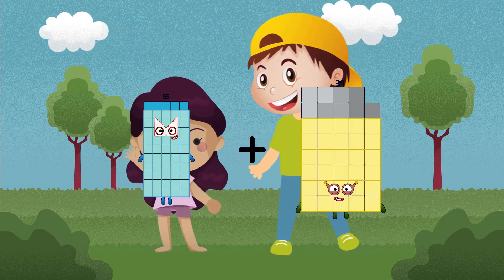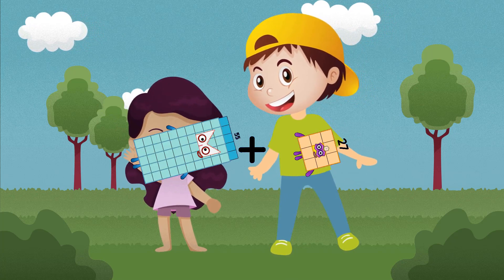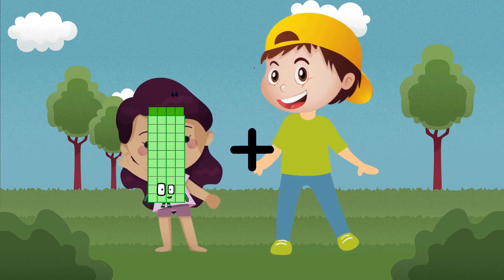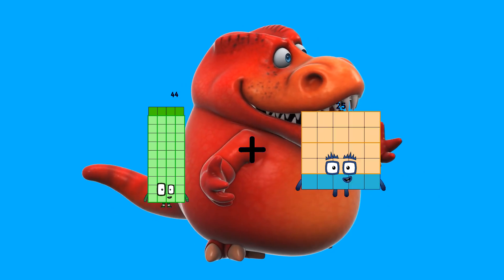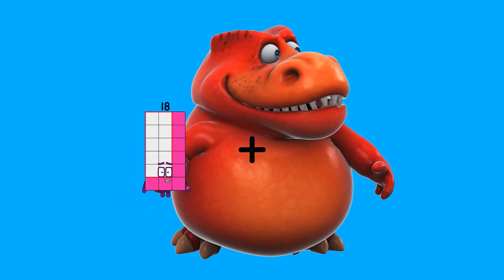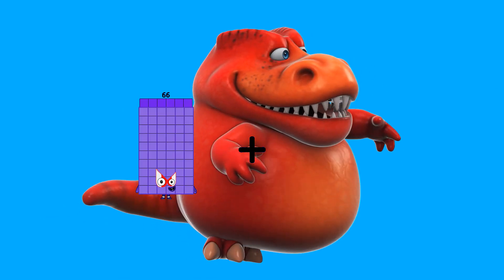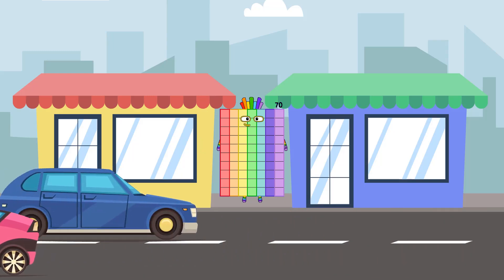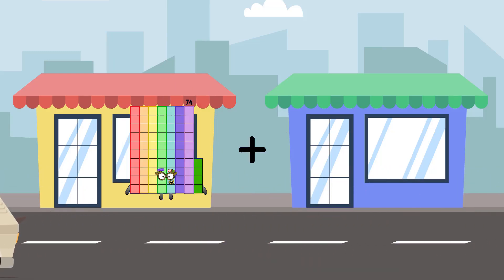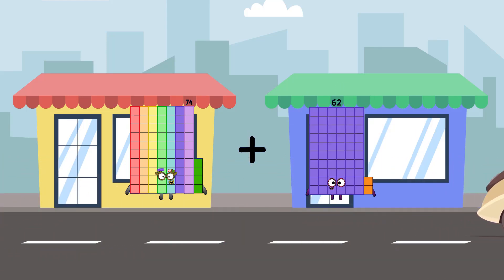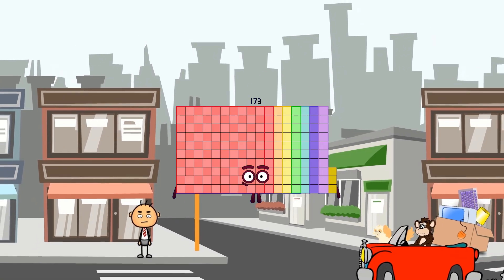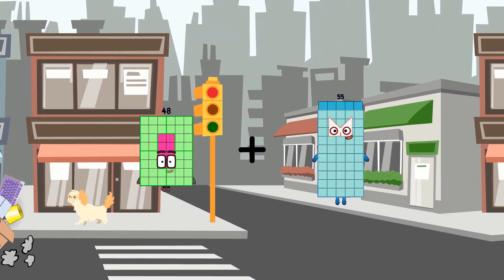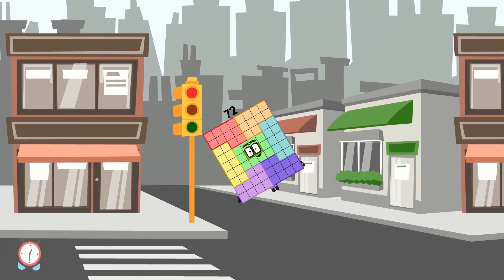55 plus 27 equals 82. 44 plus 25 equals 69. 66 plus 4 equals 70. 47 plus 24 equals 71.